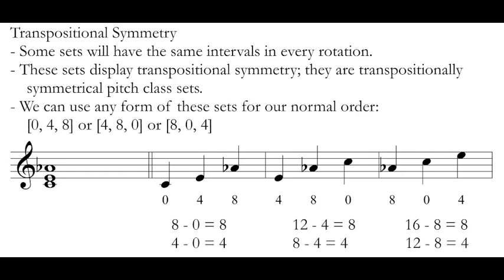These sets display transpositional symmetry. We would call them transpositionally symmetrical pitch class sets. That means every transposition of them has the same grouping of intervals. For sets like this, we can use any form for our normal order. 0, 4, 8, or 4, 8, 0, or 8, 0, 4. All of these describe a normal order for the set.